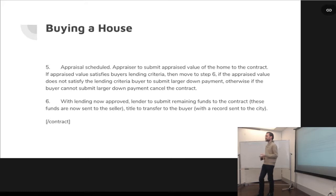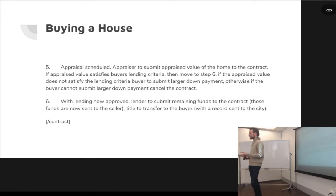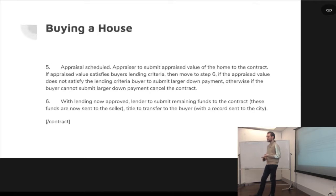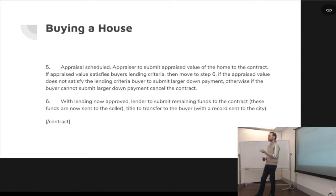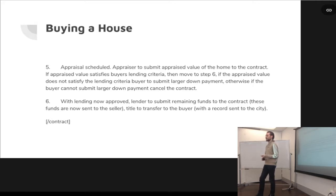Assuming the appraised value satisfies the buyer's lending criteria, we go on to step six. Now with lending approved and all inspections done, the lender sends the remaining funds to the contract. The funds get sent to the seller and the title transfers from the seller to the buyer. All of this is just an automated process — once an event occurs and it's notified to the blockchain, the contract moves on to the next step.